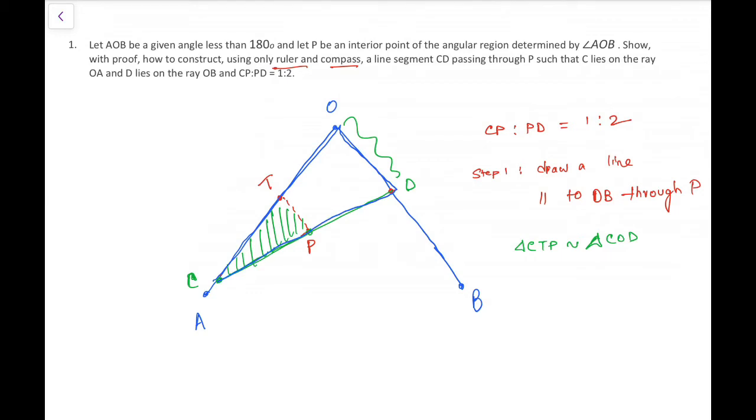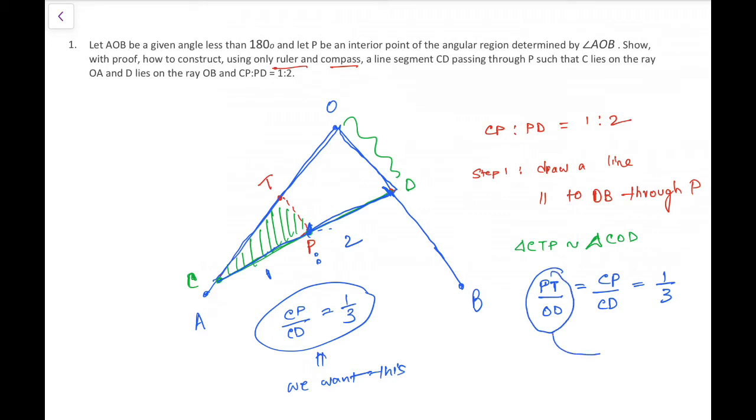Which essentially tells us that PT over OD is equal to CP over CD. CP over PD is 1 to 2, so we want CP over CD to be 1 to 3. So we will make PT over OD to be 1 to 3.